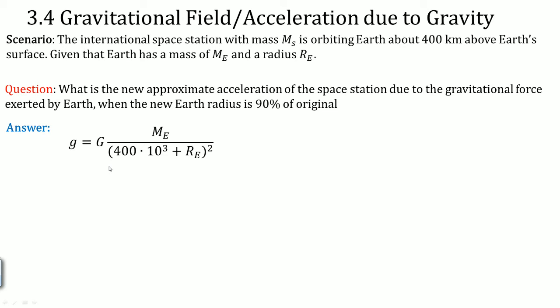The answer. This is the equation for the acceleration, which is g is equal to big G times ME divided by the total radius, which is 400 times 10 to the third plus RE, squared. This can be explained in the previous video, which is called acceleration on an orbiting satellite above Earth's surface. I derive this for you.